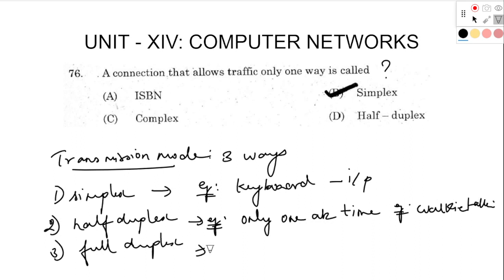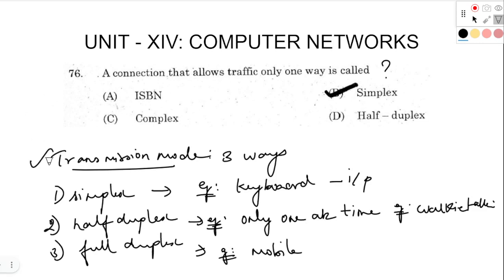Next, full duplex. The example is mobile phone. This is two-way communication — we have sent it to the receiver at the same time. We can transfer data simultaneously. So the answer is simplex, and the topic is transmission mode.